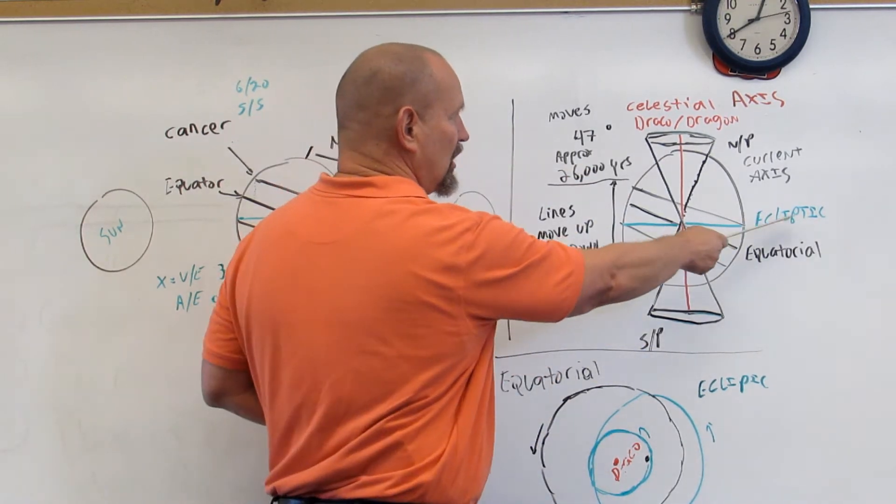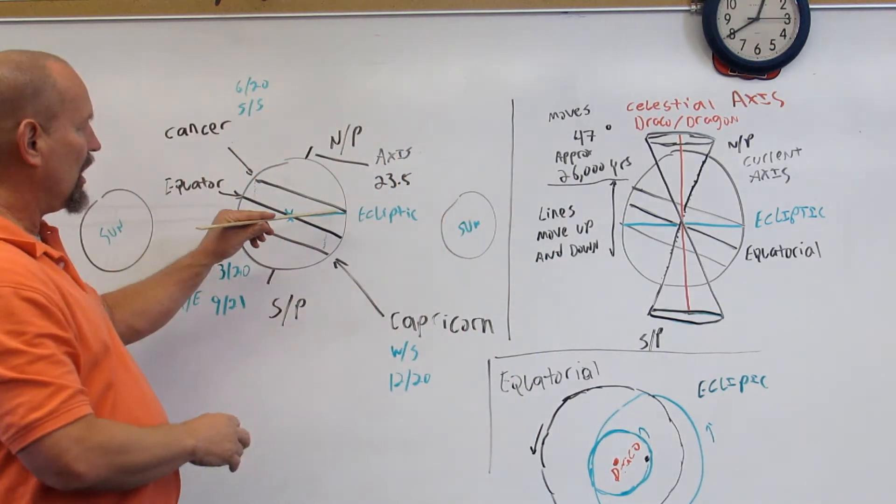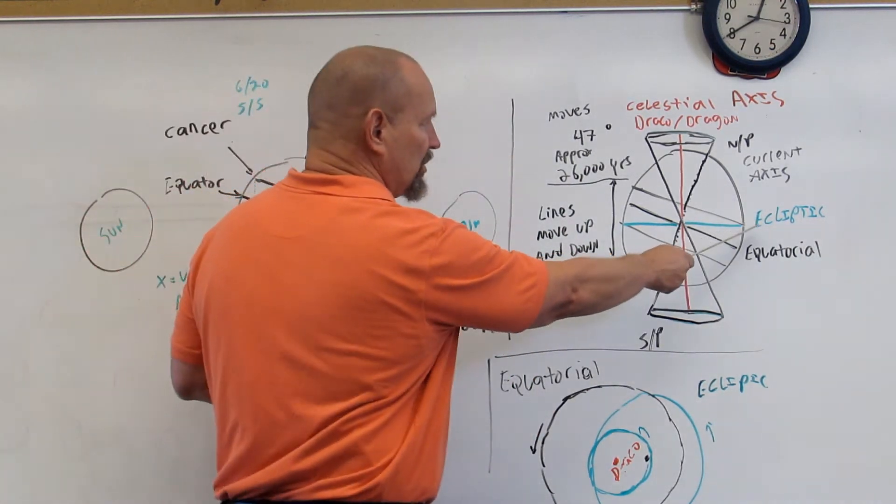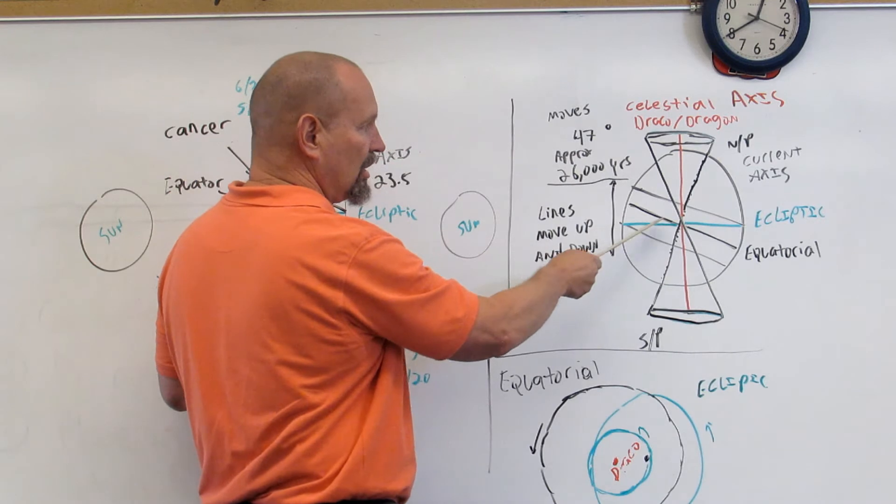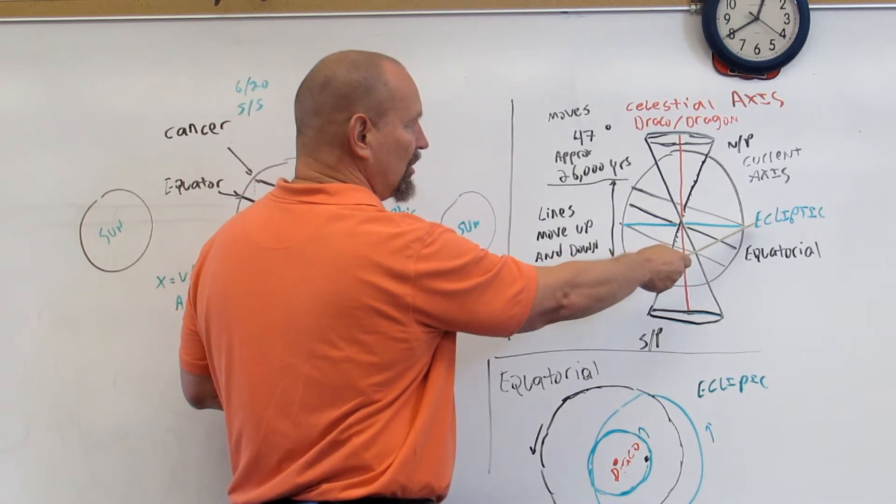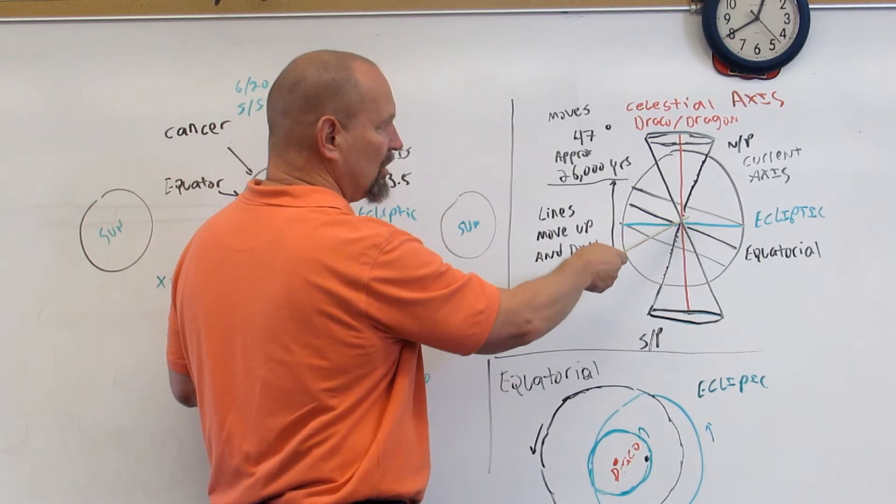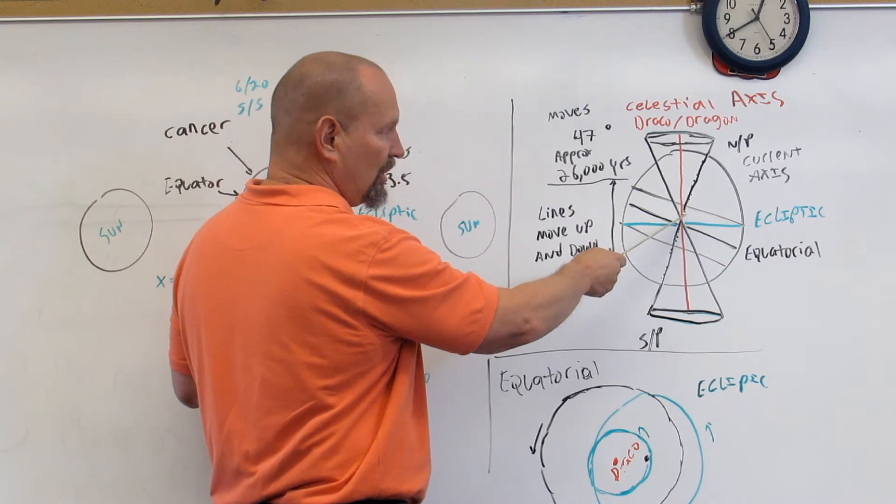You'll see the ecliptic line, as you saw it here, where the Sun is moving across the Earth. Here's your summer solstice, here's your winter solstice, and here is your equinox points.